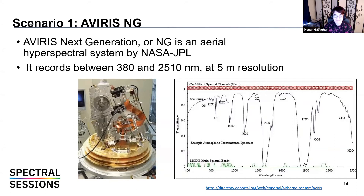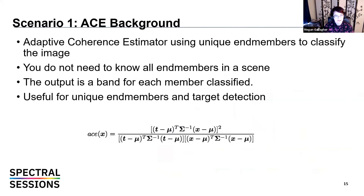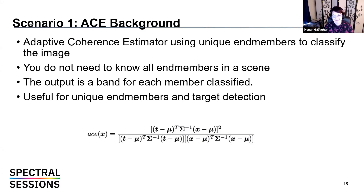AVIRIS Next Generation (NG) is an aerial hyperspectral system by NASA JPL. It records between 380 and 2510 nanometers at about five-meter resolution. We can see in the coverage panel the large number of bands available across all areas and spectral properties of interest.